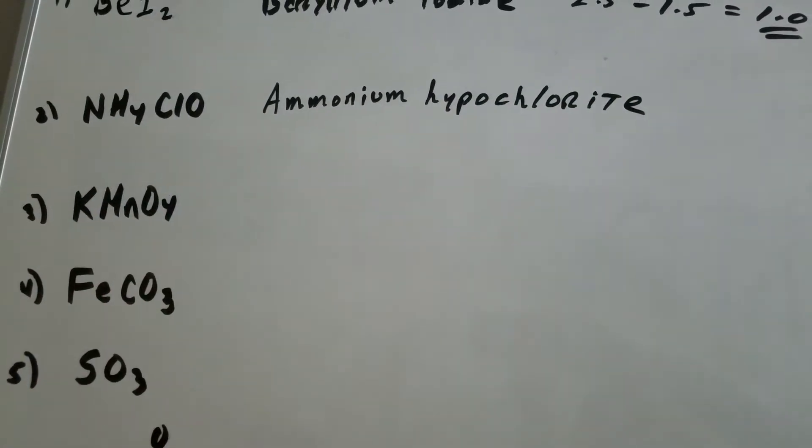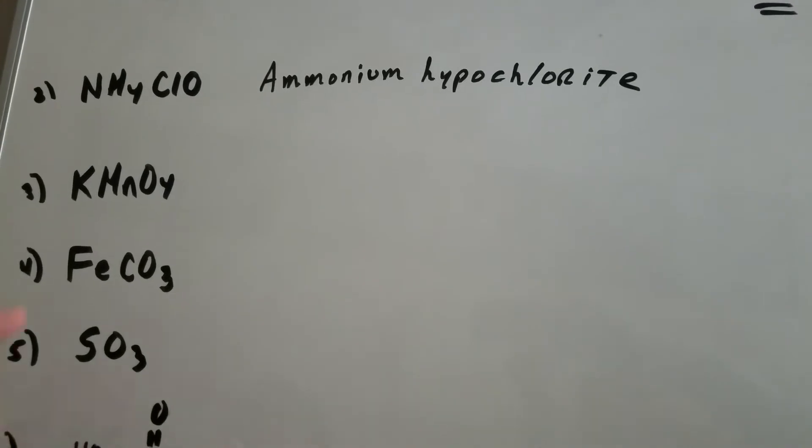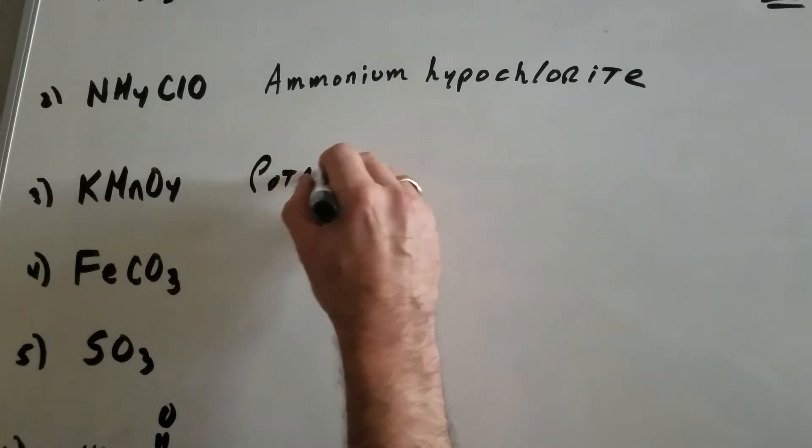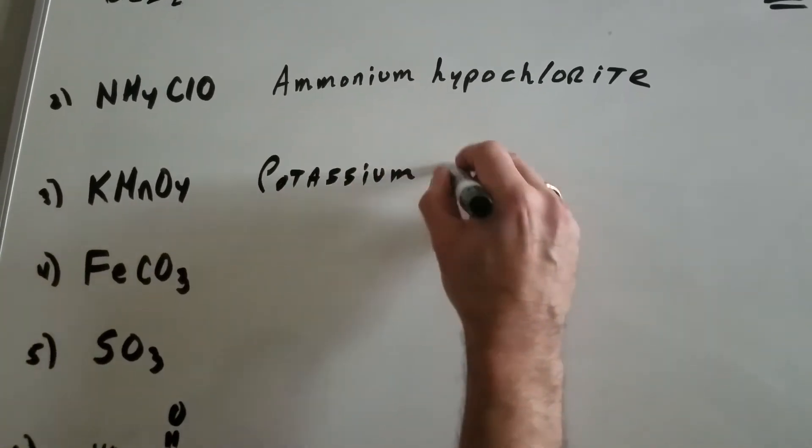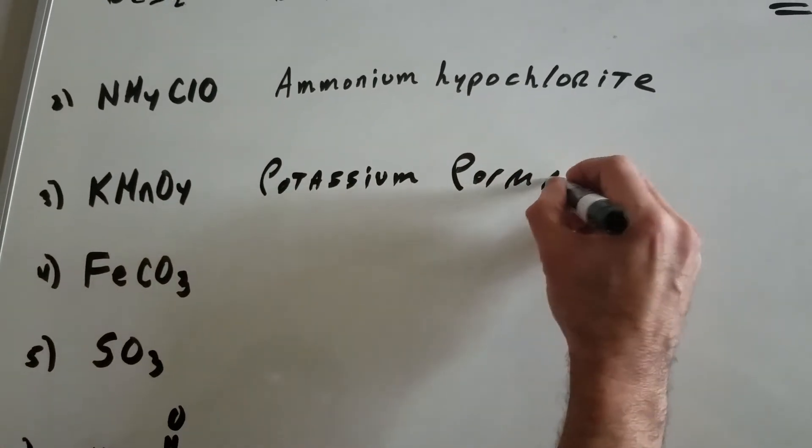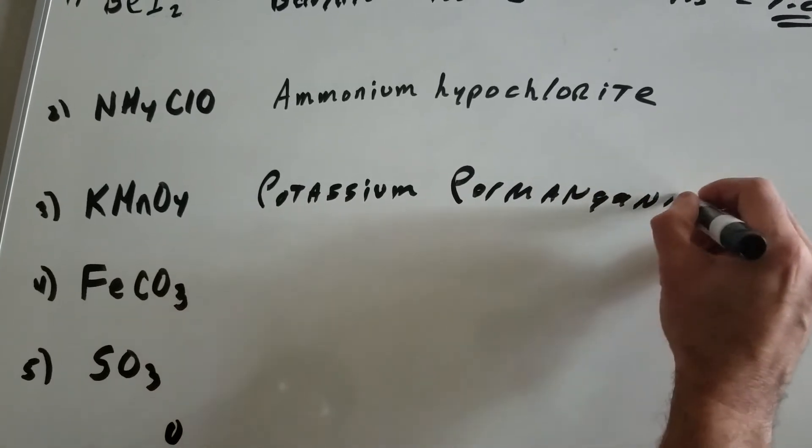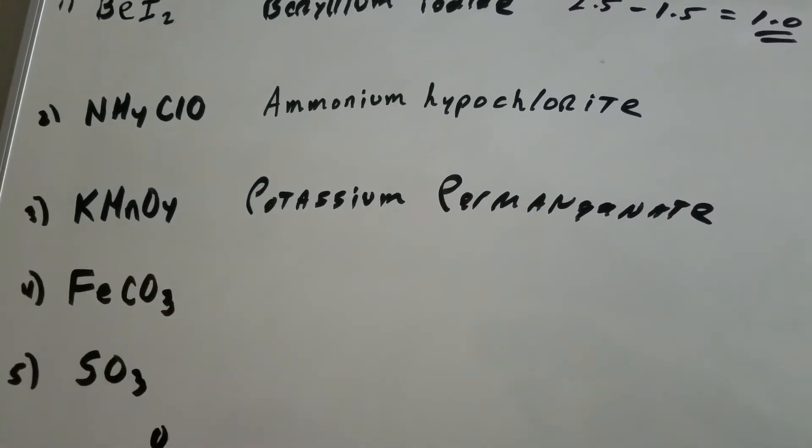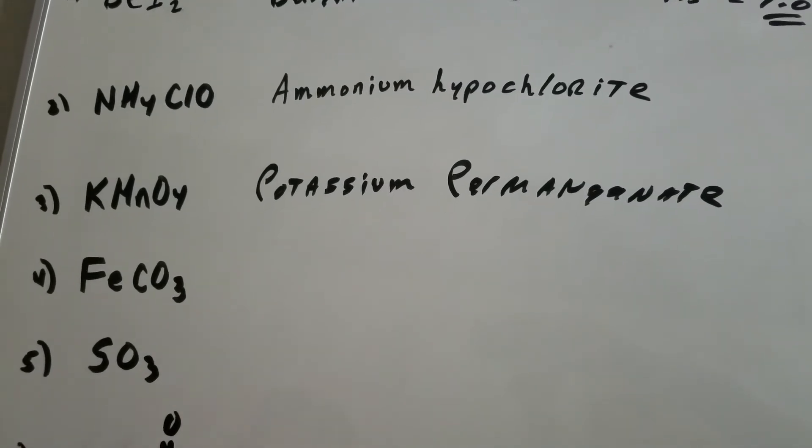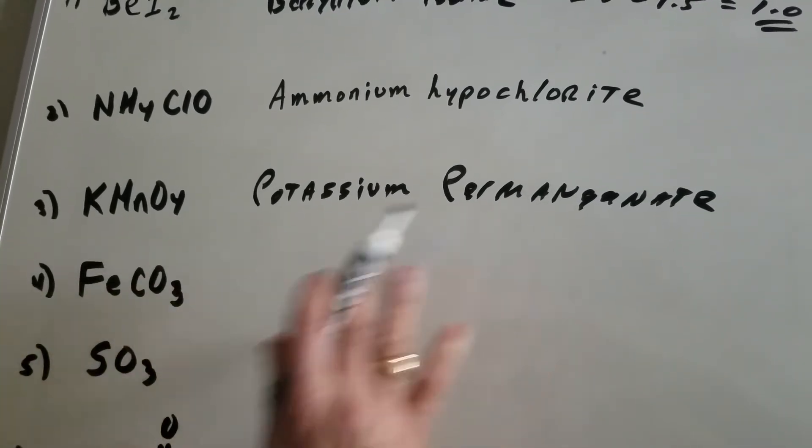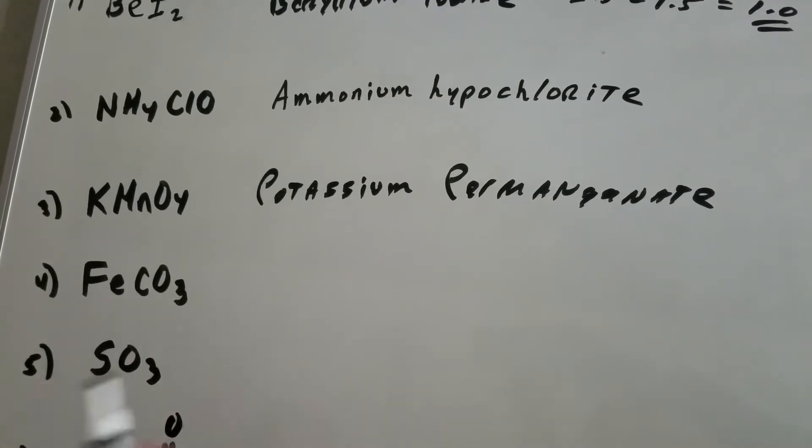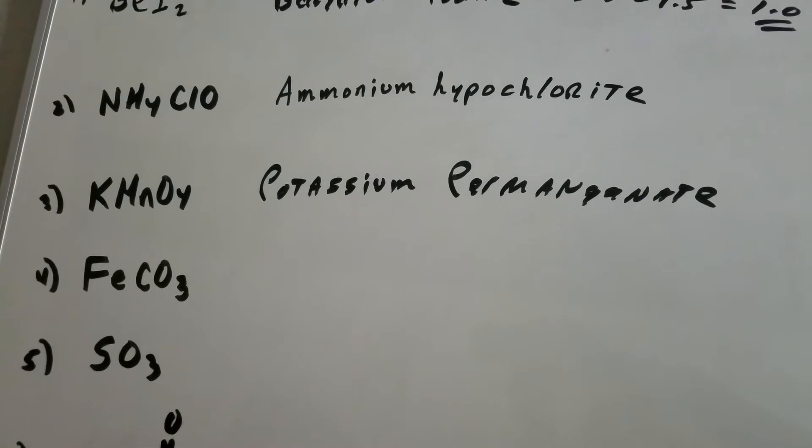This one you should recognize from organic chemistry. This is that beautiful purple color of potassium permanganate. If you remembered, this compound would react with double or triple bonds, and it would change from a beautiful purple to a brown. It's a test for unsaturation, as is bromine and carbon tetrachloride.